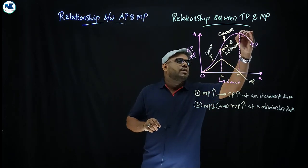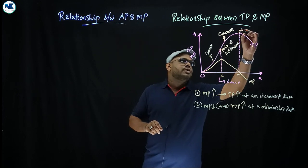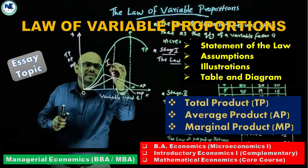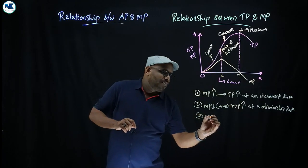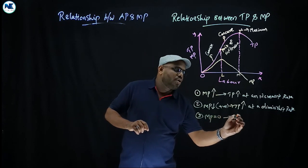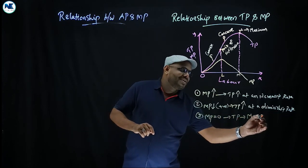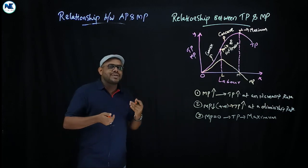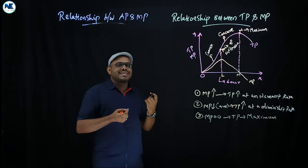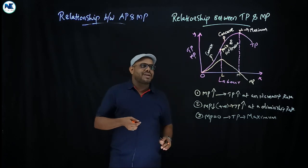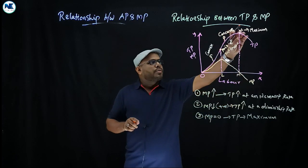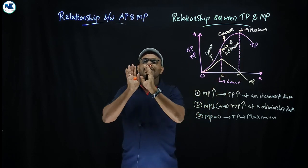When total product reaches its maximum, that is a very important relationship. When marginal product becomes zero, then total product reaches its maximum. Or equivalently, when total product is at its maximum, then marginal product will be zero.